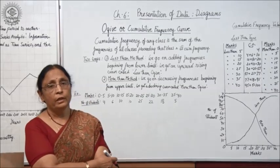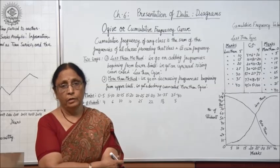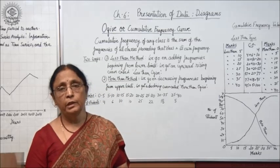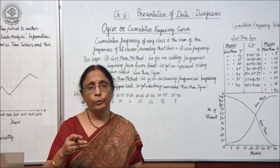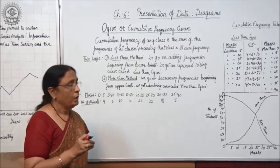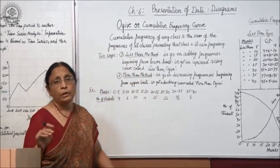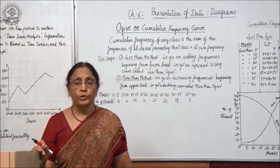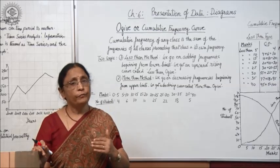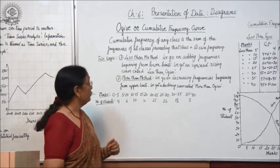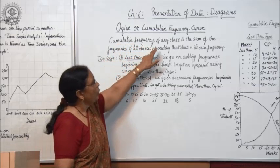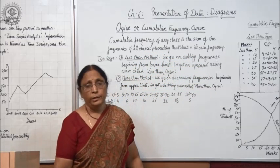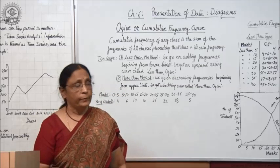Now children, I will tell you something about cumulative frequency curve. You have done earlier the meaning of cumulative frequency, and you are well aware that cumulative frequency means the added up frequencies. When we go on adding frequencies, then we get the cumulative frequencies. We learn about cumulative frequency curve, also known as ogive. The cumulative frequency of any class is the sum of the frequencies of all classes preceding that class and its own frequency. This is the meaning of cumulative frequency, that means added up frequency.